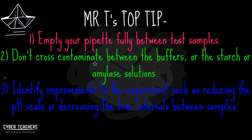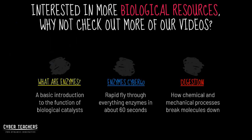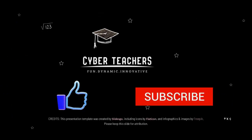Mr T's top tip has three parts. Number one: empty your pipette fully between taking samples so you don't split the reaction between the test tube and the pipette. Number two: don't cross-contaminate between buffers, amylase, or starch. Number three: look for improvements — such as reducing the pH scale or reducing the time interval from every 30 seconds to every 15 or 10 seconds. Why not check out more of our videos or our Cyber 60s for a 60-second version? If you found this Cyber Teachers video informative and helpful, click like and subscribe.